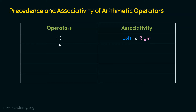The second operator in the list is the exponent or power operator. This operator has right-to-left associativity. Being second in the list, it has higher precedence than the remaining operators, but lower precedence than parentheses. This means that if an expression contains both parentheses and the exponent operator, the parentheses will be resolved first and then exponentiation will be performed.